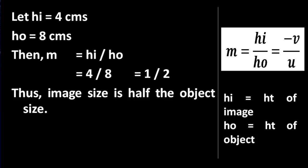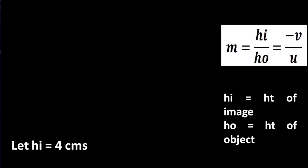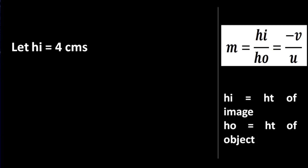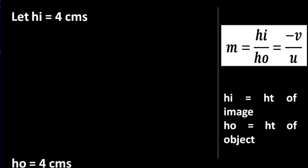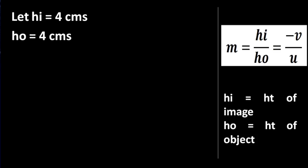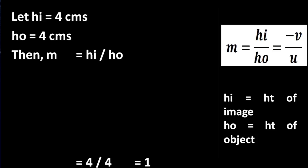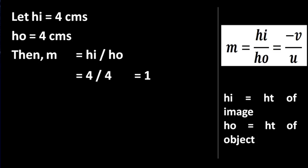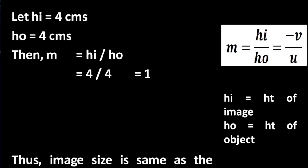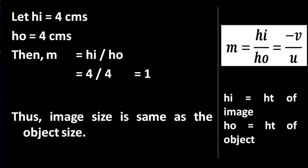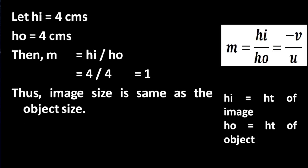Let us see one more example. Let height of image be 4 centimeters and height of object also be 4 centimeters. Magnification is the ratio of height of image to height of object, so we get magnification equal to 1. Magnification equal to 1 means that the image size is the same as the object size.